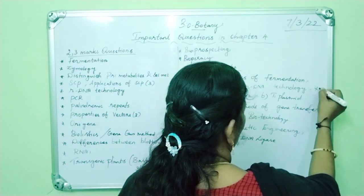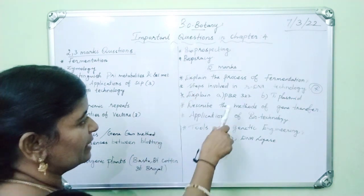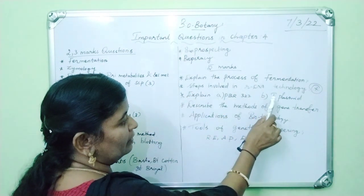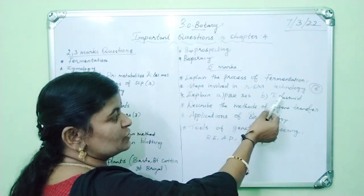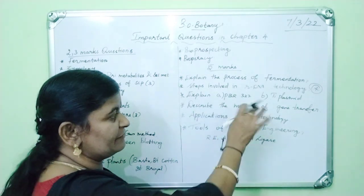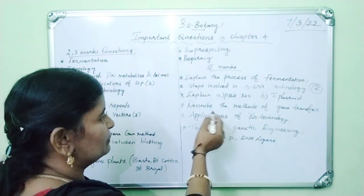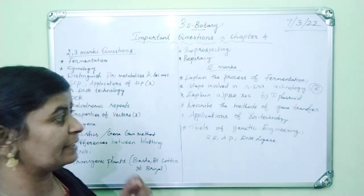Next question - steps involved in R-DNA technology. Then explain PBR 322, that is PBR 322 plasmid. Then TI plasmid, tumor inducing plasmid. They might ask as a five mark question.